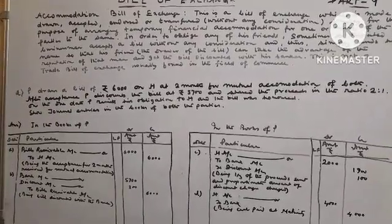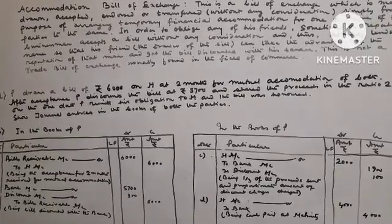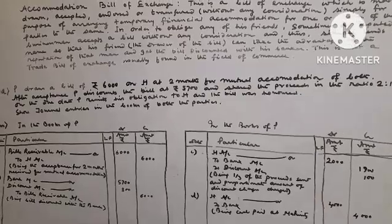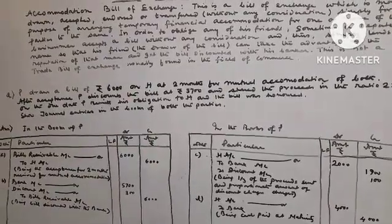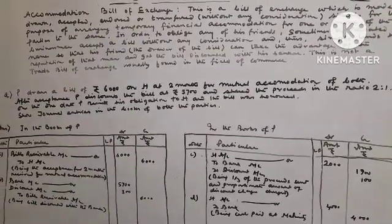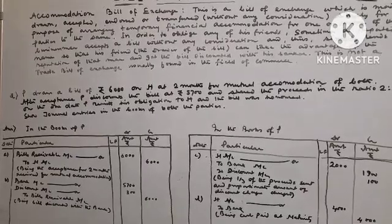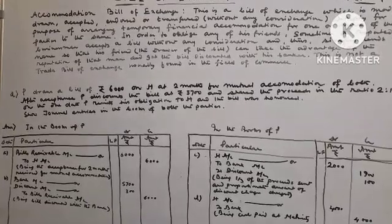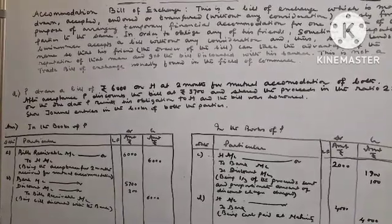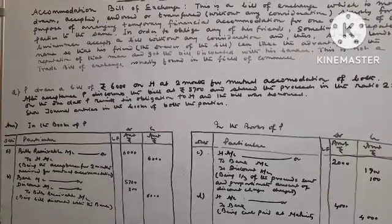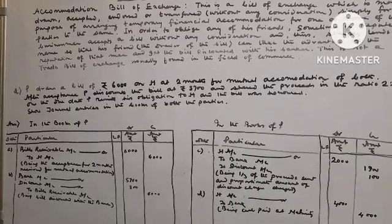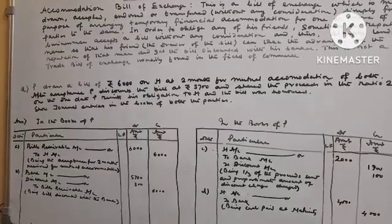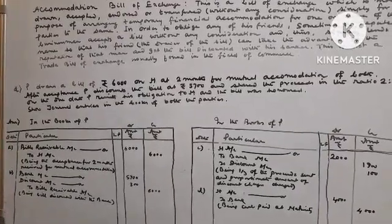Now, a question has been given. P draws a Bill of Rs. 6,000 on H at two months for mutual accommodation of both. After acceptance, P discounts the Bill at Rs. 5,700 and shares the proceeds in the ratio 2:1. On the due date, P remits his obligation to H and the Bill is honored. Show journal entries in the books of both parties.